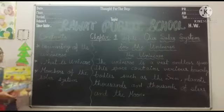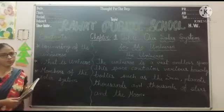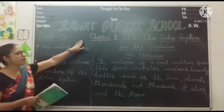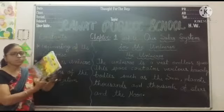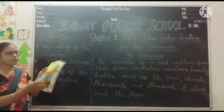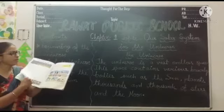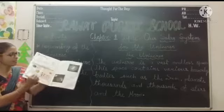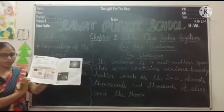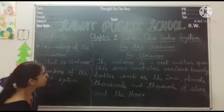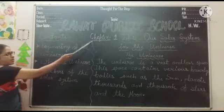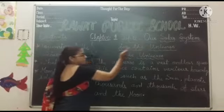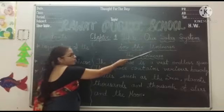Good morning students. I hope you all are good. Today we will discuss chapter number 1. This is our SST book, open page number 2, chapter 1. Now I am going to start chapter number 1. The topic is our solar system in the universe.